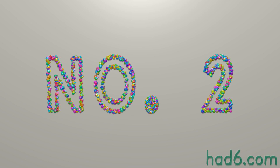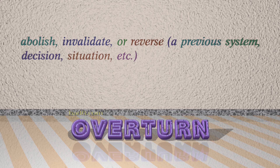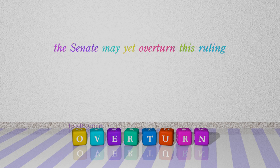Number 2: Overturn. Which means: abolish, invalidate, or reverse a previous system, decision, situation, etc. For example: The senate may yet overturn this ruling.